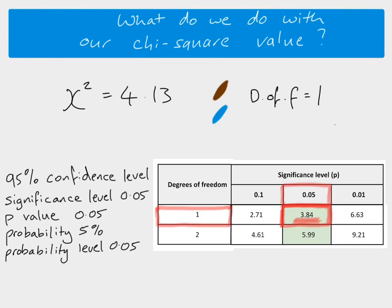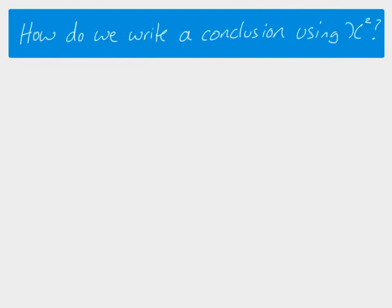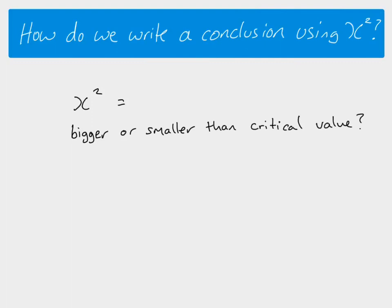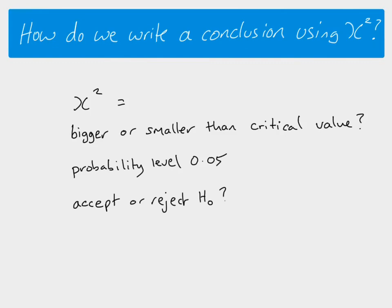We now use that information to make a conclusion about our data. A conclusion needs to include: what our calculated chi-squared value is; whether that value is bigger or smaller than the critical value from the table; what probability level we're working at, which is always 0.05; and whether we accept or reject the null hypothesis — and from that, whether there is a significant difference between our observed and expected results.